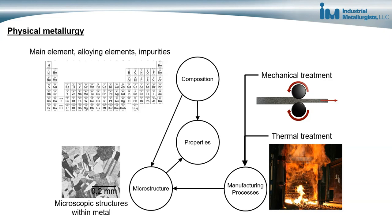The composition of a metal refers to the main element present in the metal, the alloying elements that are present, and different impurities that might be present. We can change the main element, add different alloying elements, and also control impurities in order to get specific properties in the metal.